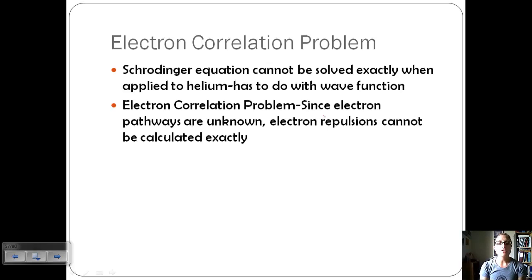This electron correlation problem says that since electron pathways are unknown, remember we talked about how we just have electron probability, electron repulsions cannot be calculated exactly. Once we add more than one electron, we have these repulsions. That's why this occurs only with polyelectronic atoms, which is basically everything but hydrogen.